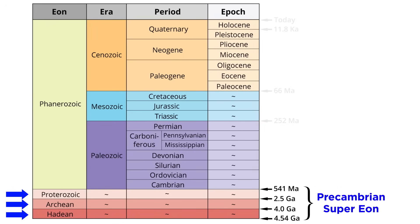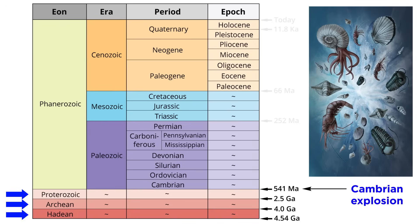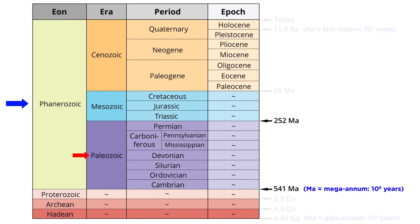In the previous tutorial, we paused our story of Earth's history at the end of the Proterozoic Eon and the Cambrian Explosion. The first era of the Phanerozoic Eon is the Paleozoic Era, which lasted from 541 to 252 million years ago. It was a time of great change, and many new types of organisms evolved during the Paleozoic.